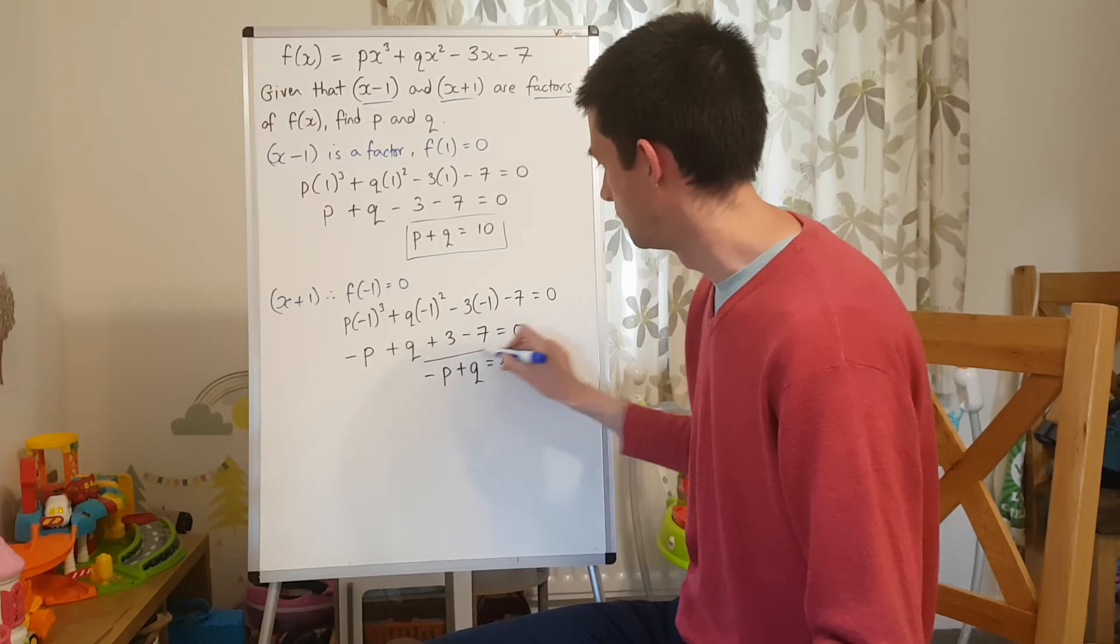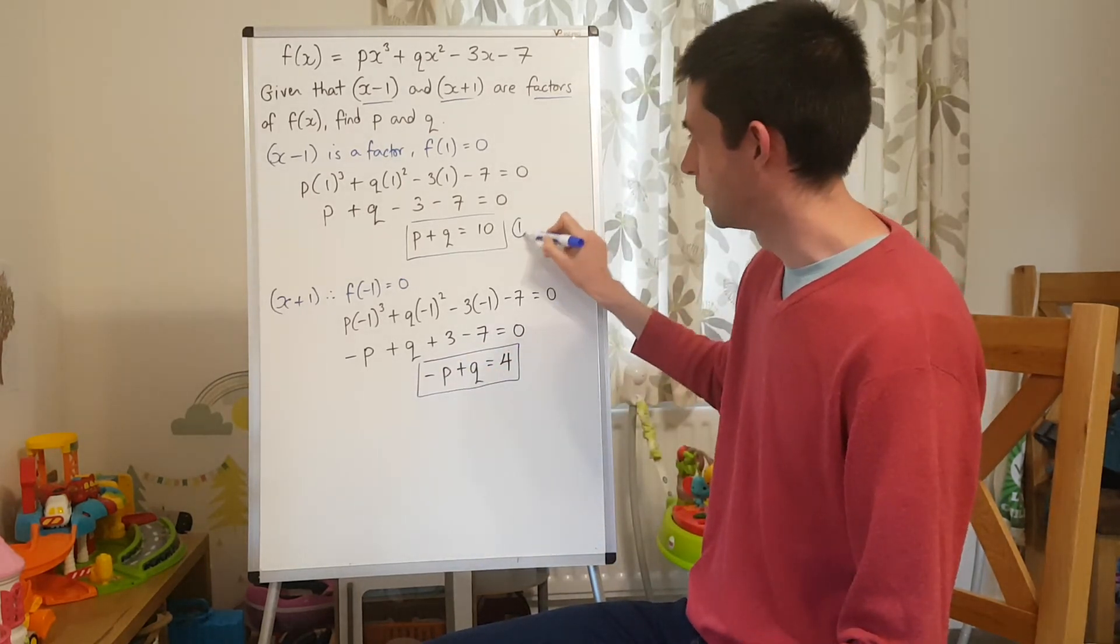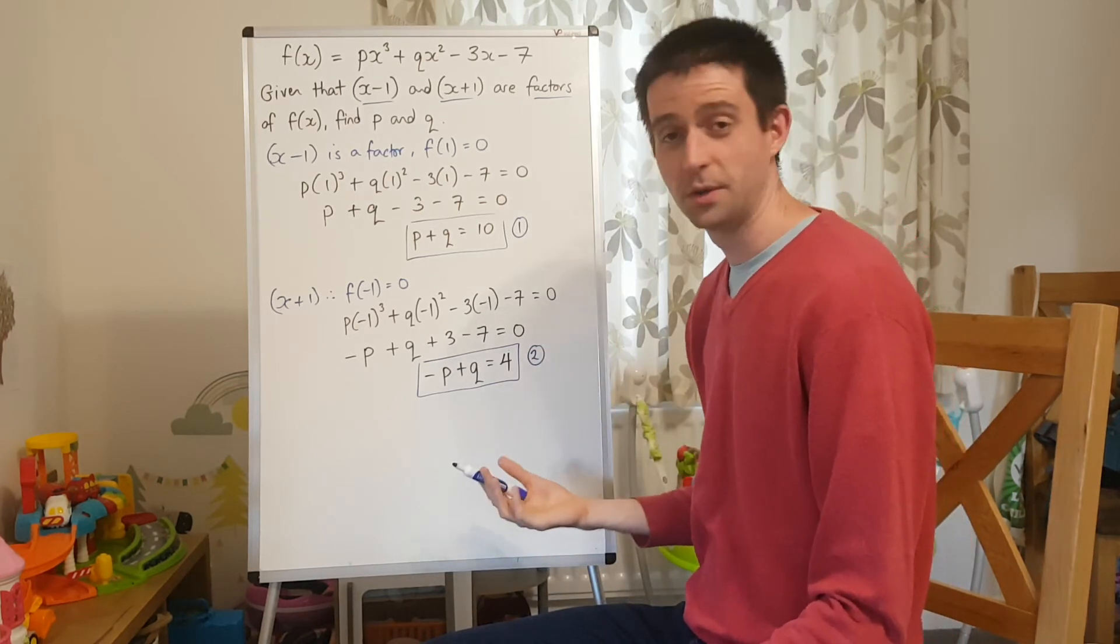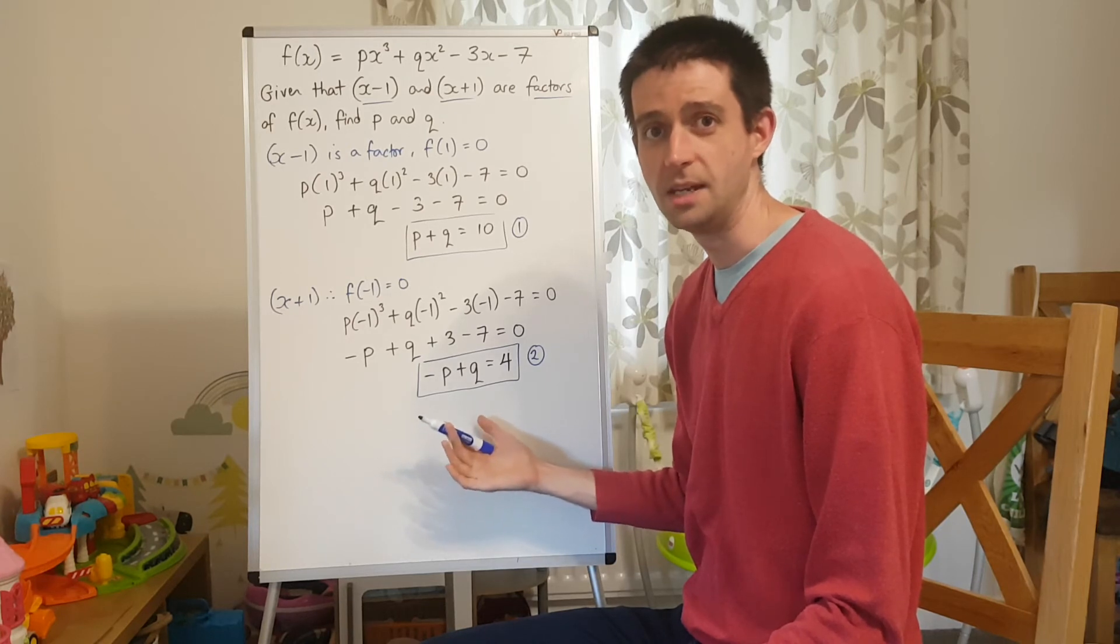And again, I'll box that, because you can probably see where this is going. I have equation 1 here, and I have equation 2. And what I'm now going to do is solve those equations simultaneously to find p and q.